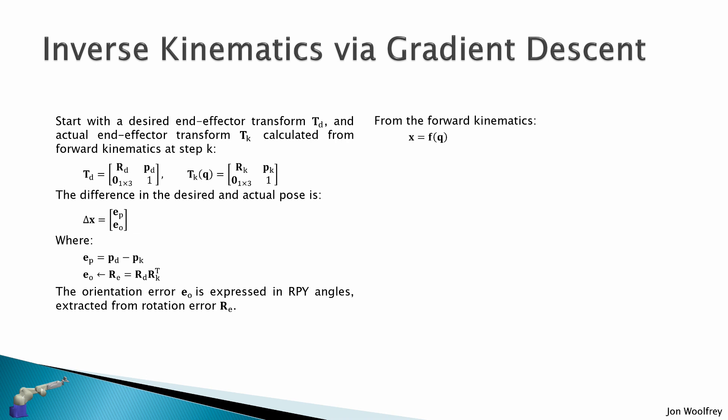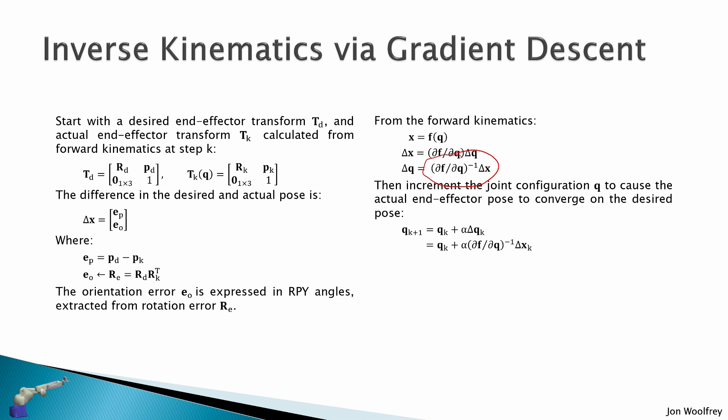Then from the forward kinematics, we know that x is some vector function of q. And therefore we can say delta x is the partial derivative of f with respect to the partial derivative of q by delta q. And then I just flip this around to solve for q. So I take the inverse of this partial derivative matrix here. Then I can just increment the joint configuration q to cause the actual end effector pose to converge on the desired pose. That is qk+1 = qk + α·delta qk. And we know that delta qk is given by this expression here, and delta x is just the pose error.